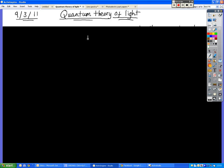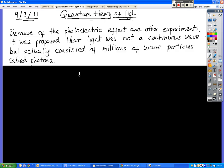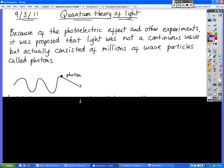Quantum theory of light. We looked at the photoelectric effect and there are other experiments as well that basically confirm that light cannot just be a continuous wave. The results that you see from the photoelectric effect and other such experiments prove that light must be made of particles occasionally as well. So we call those particles photons.